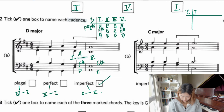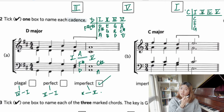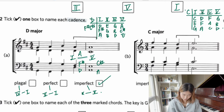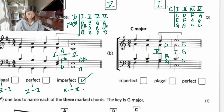Next example in C major. Table: I = C, E, G; II = D, F, A; IV = F, A, C; V = G, B, D. Looking at the first chord: G, B, D — that's V. Next: C, G, E — C, E, G — that's I. So five to one — that's a perfect cadence, which sounds like a complete ending to the section.